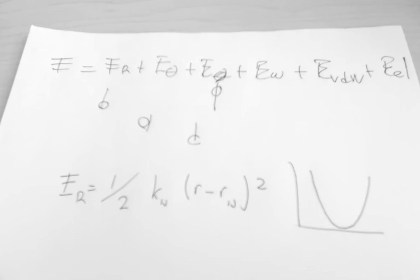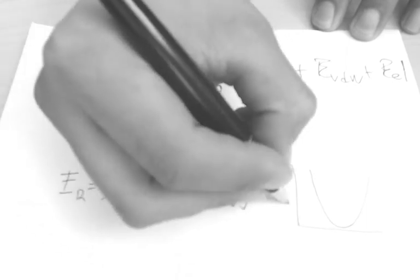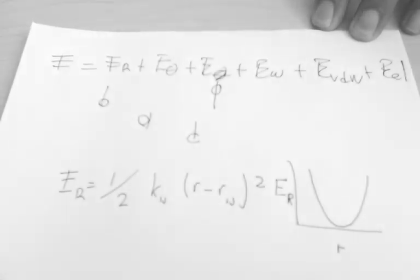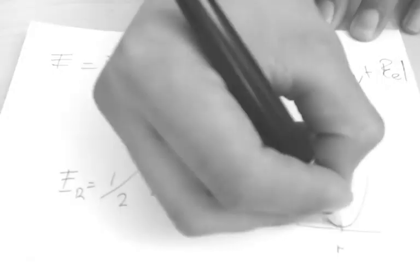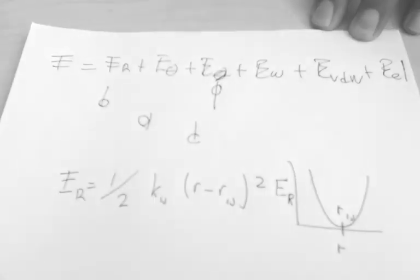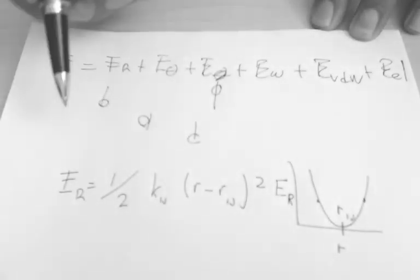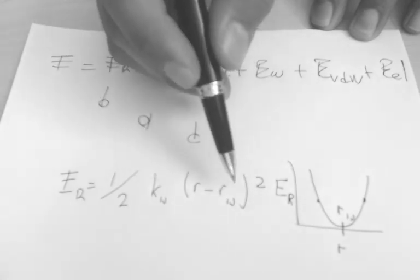There's going to be a reference distance which is the basis for this function, and then the actual bond length in the molecule. So if this is E_R and this is R, the minimum should be at r_ij. The bond length can be anywhere, and what happens is that the energy changes—if you multiply the term, what changes is the distance between the borders of the parabola.